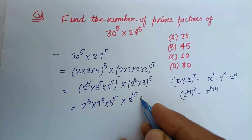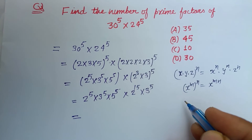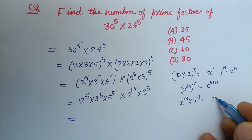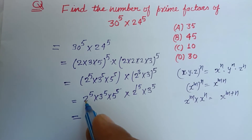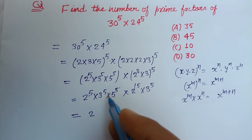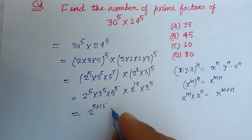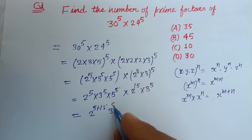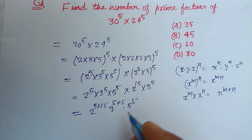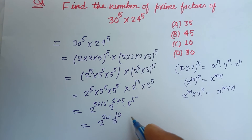Using the rule xᵐ · xⁿ = xᵐ⁺ⁿ, we combine like bases: 2¹⁵ · 2⁵ = 2²⁰, 3⁵ · 3⁵ = 3¹⁰, and 5⁵ remains. So the expression simplifies to 2²⁰ · 3¹⁰ · 5⁵.